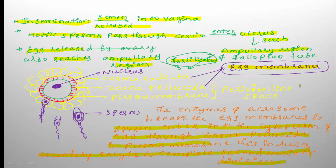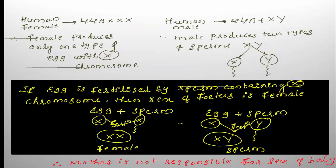When the sperm enters the egg, the secondary oocyte completes the second meiotic division — an unequal division producing one smaller polar body and one larger ootid (the functional ovum). The human female has the karyotype 44A + XX, producing only one type of egg carrying the X chromosome, making the female homogametic. The male has karyotype 44A + XY, producing two types of sperms: 50% carrying X and 50% carrying Y chromosome.